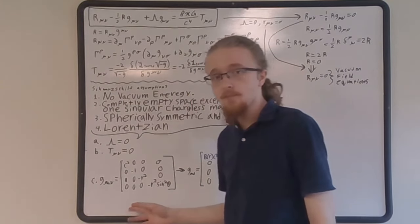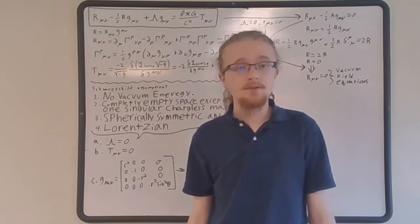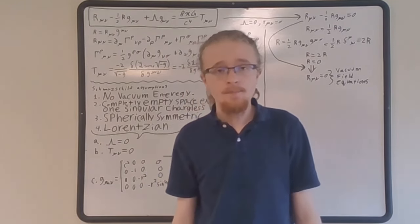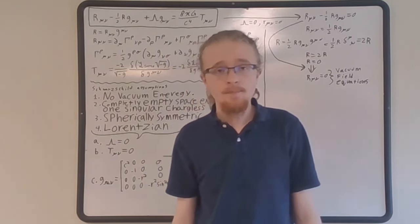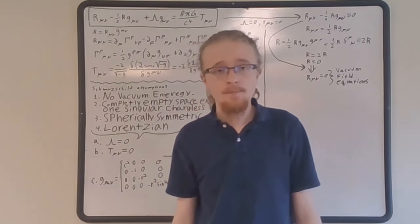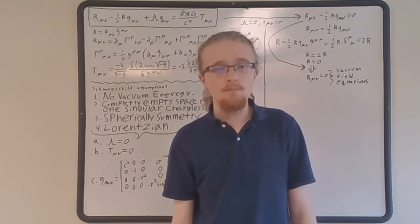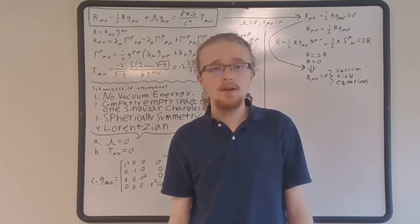The next step is to look at the Minkowski metric in spherical coordinates, which is Lorentzian, and deduce the most general possible alterations we can make to it without violating conditions three and four. This exercise gives us the ansatz for the Schwarzschild metric. First, the Minkowski metric already has the correct Lorentzian metric signature, so the most general allowed alterations cannot include changing the sign of the diagonal components. Second, in spherical coordinates, non-zero off-diagonal components in the metric break spherical symmetry and must be excluded.